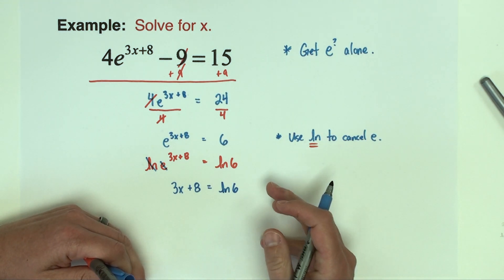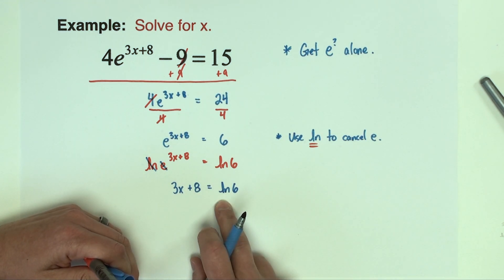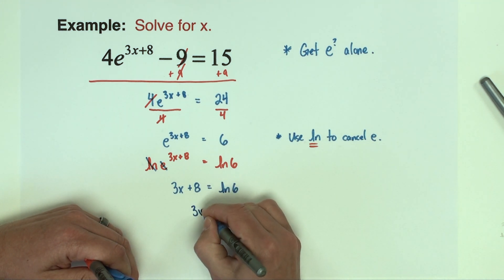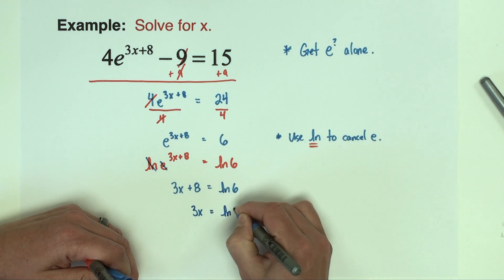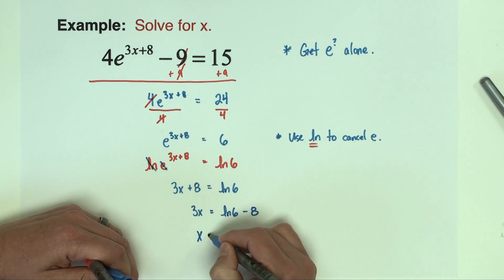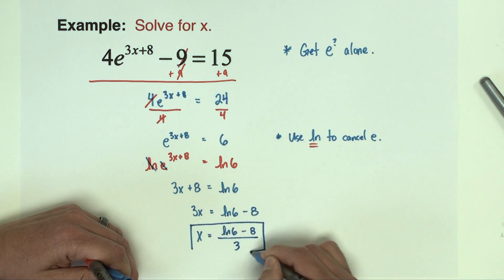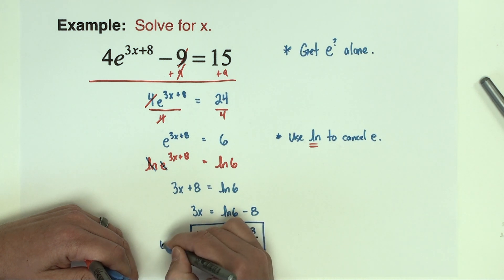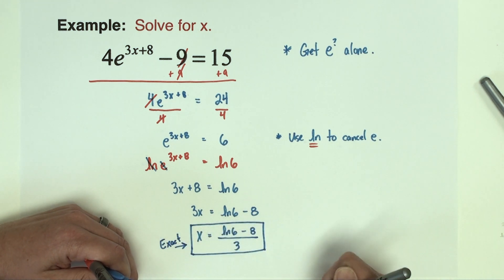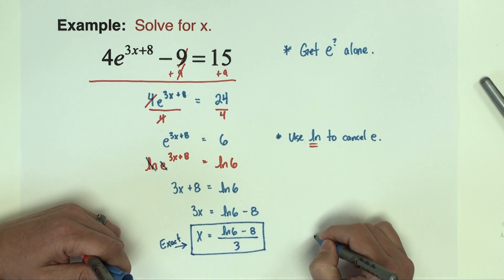Now we'll finish this equation by just doing standard couple steps to get the x by itself, so we're going to subtract eight. So I'll have 3x equals natural log six minus eight, divided by three. If you are needing or wanting an exact answer, that's it, that's exactly how you want to write it.